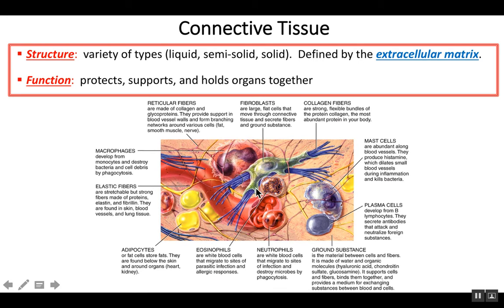There are also a lot of other types of cells in connective tissue. You might have adipocytes, which are fat-storing cells. You might also have immune system cells like eosinophils, neutrophils, plasma cells, mast cells, and macrophages. The key things to remember are the cells that produce fibers — fibroblasts — and the different kinds of fibers: collagen, reticular, and elastic fibers.